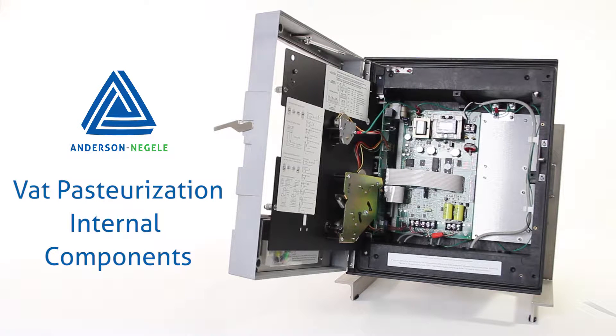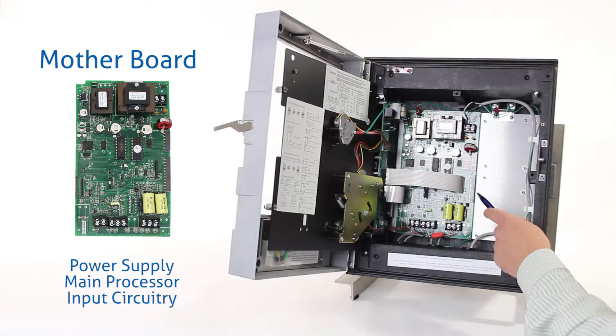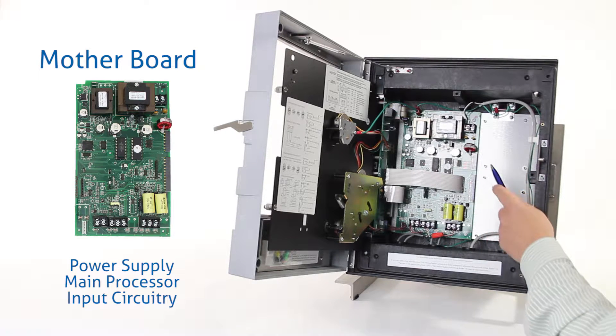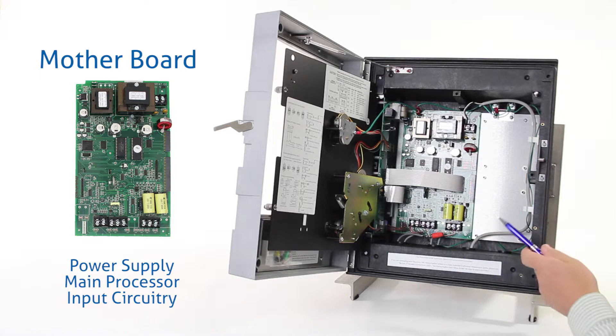Right now we're going to look at the internal components of the AJ300 recorder. First we have the motherboard. The motherboard acts as the power supply, the main processor, and also has the input circuitry on it.